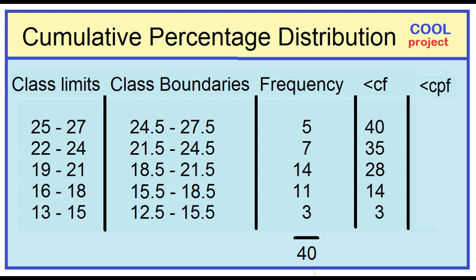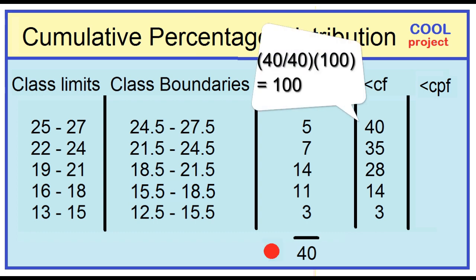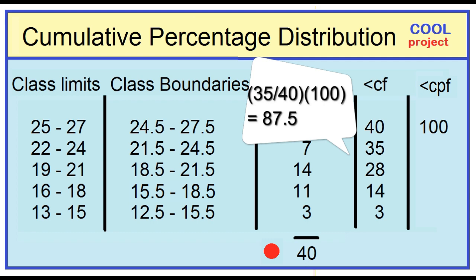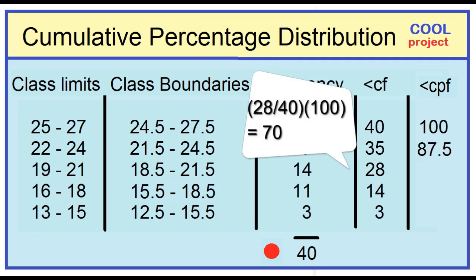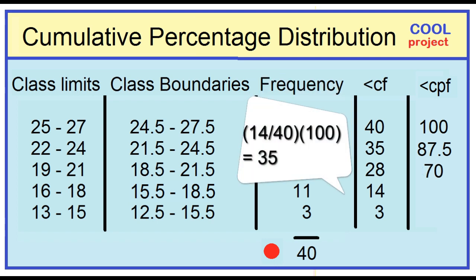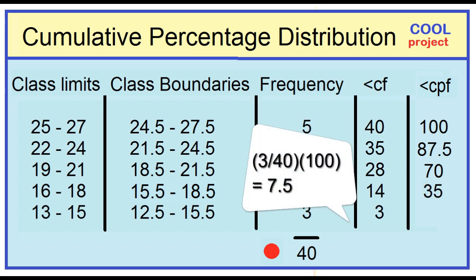40 divided by 40 times 100 is 100. 35 divided by 40 times 100 is 87.5. 28 divided by 40 times 100 is 70. 14 divided by 40 times 100 is 35. 3 divided by 40 times 100 is 7.5.